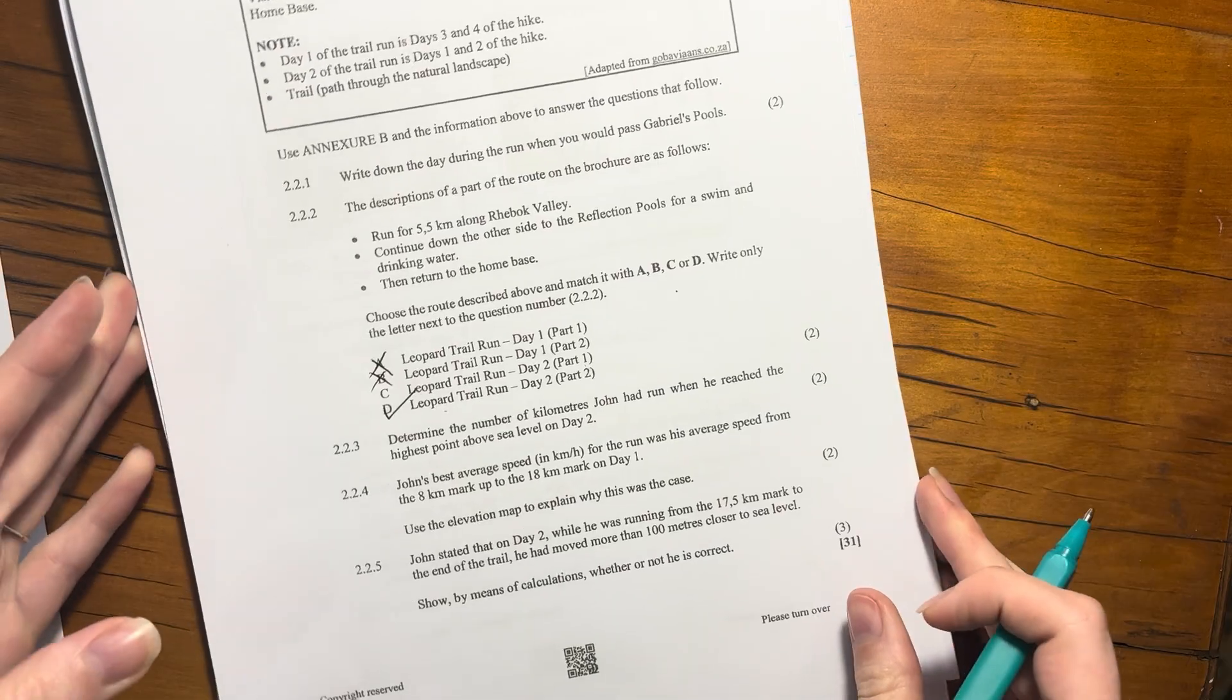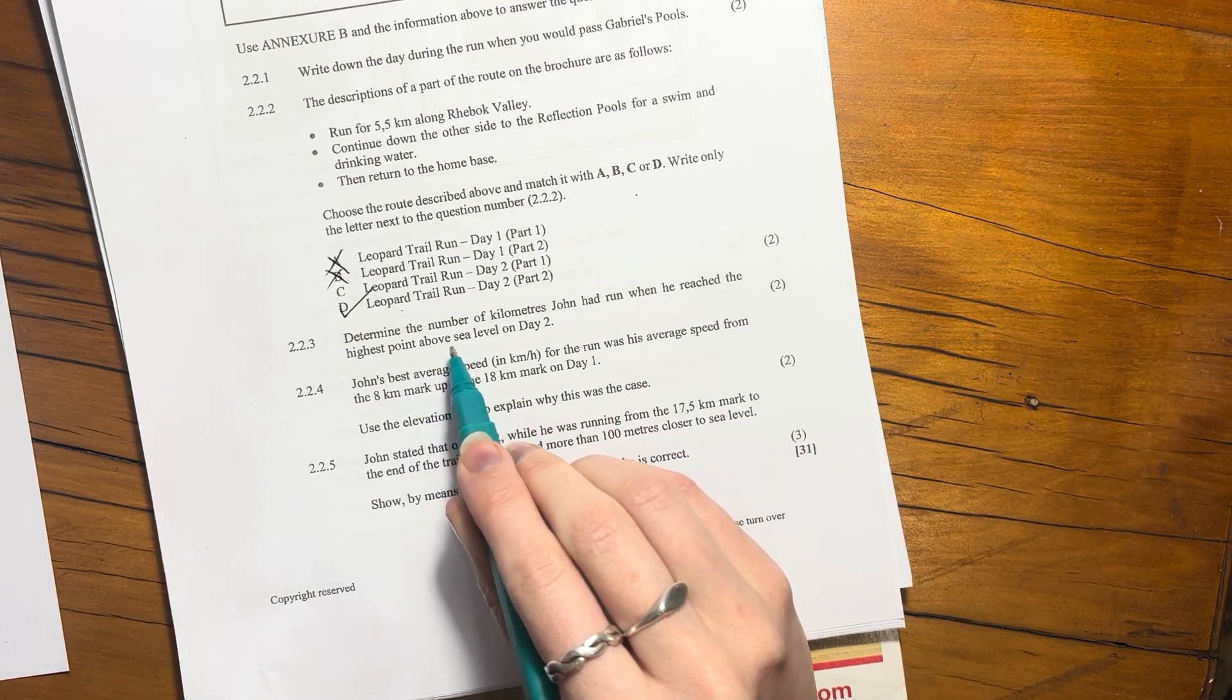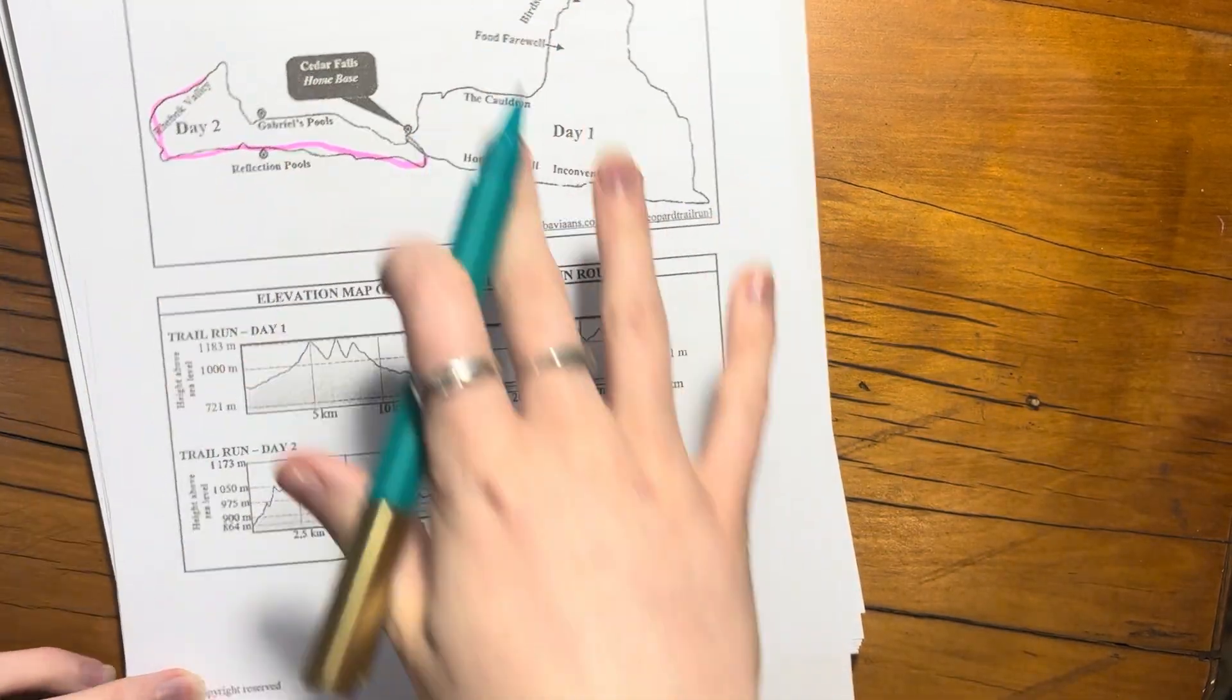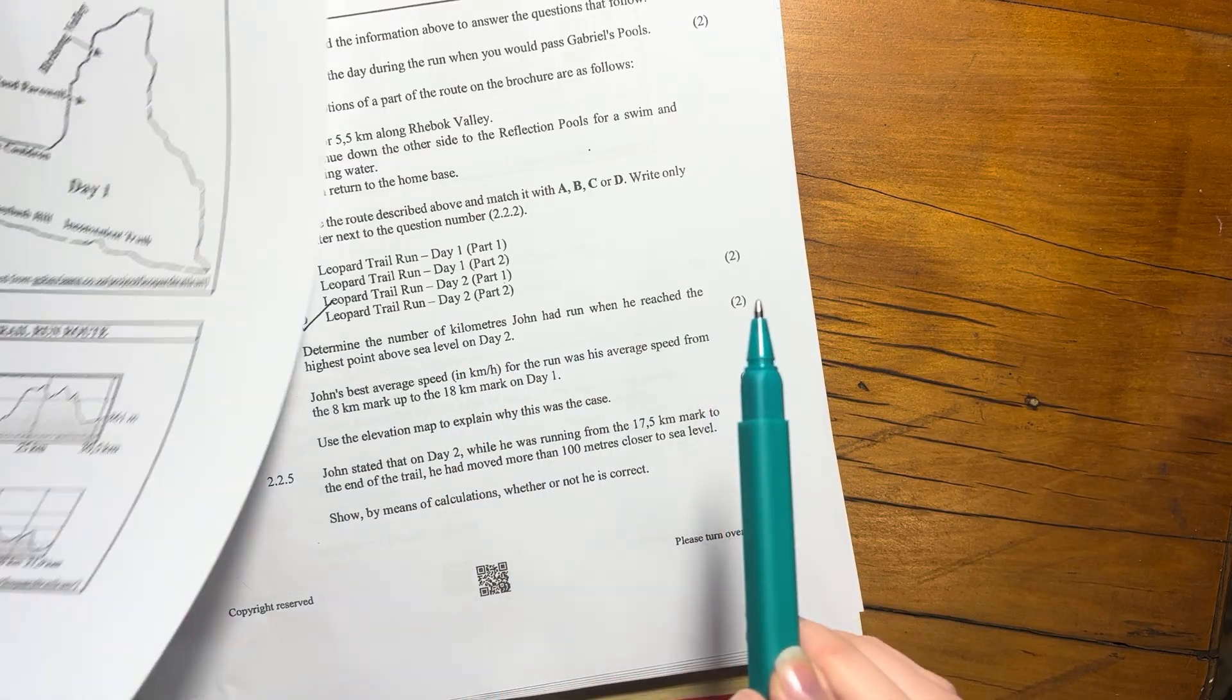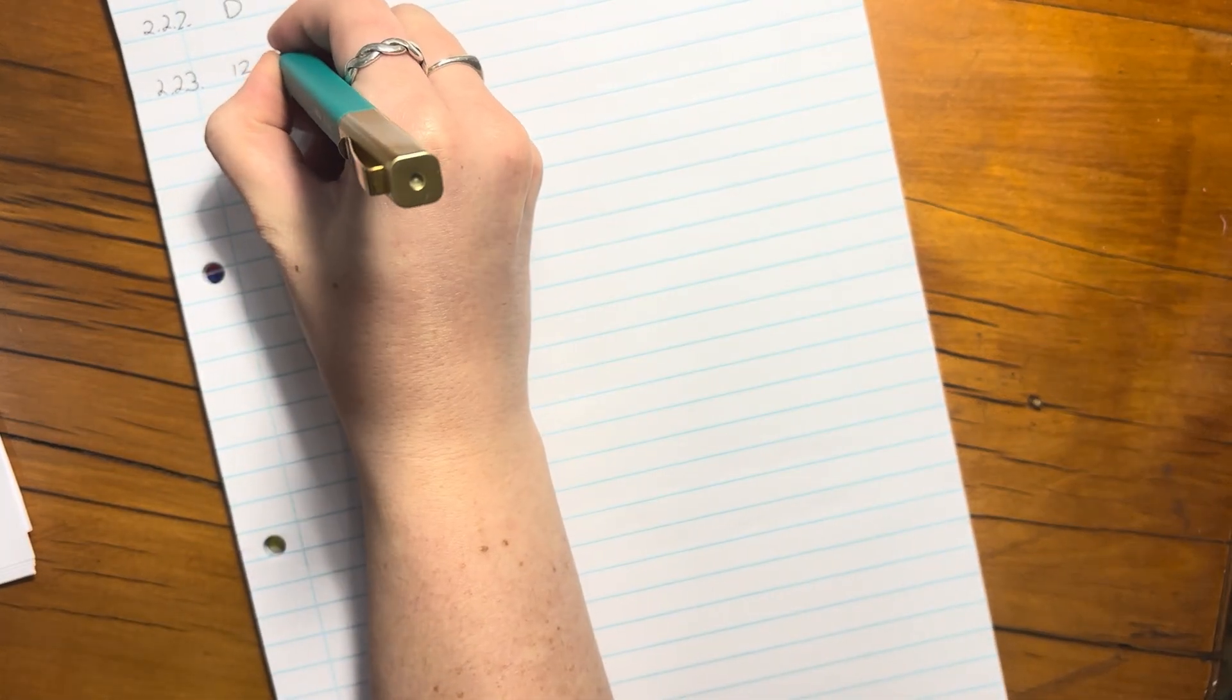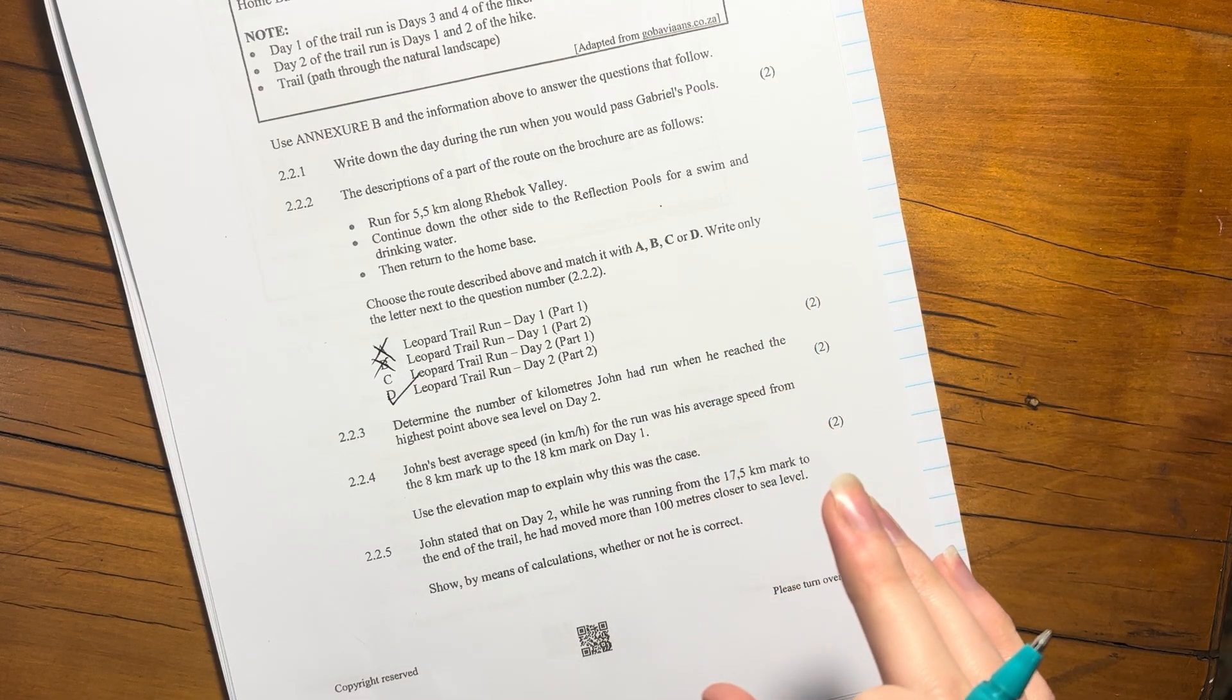Let's move on to our next question. Determine the number of kilometers John has run when he reached the highest point above sea level on day two. When we talk about the highest point above sea level, we're talking about elevation. Let's go to day two. We're not looking at this anymore, we're looking at the elevation. We talked about day two, and it says determine the number of kilometers he has run when he reached the highest point. The highest point is over here.